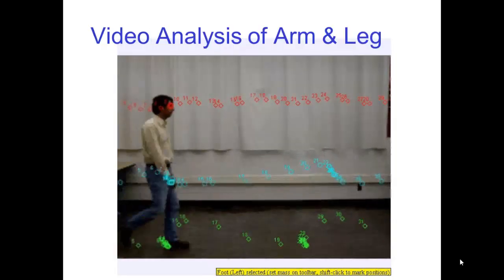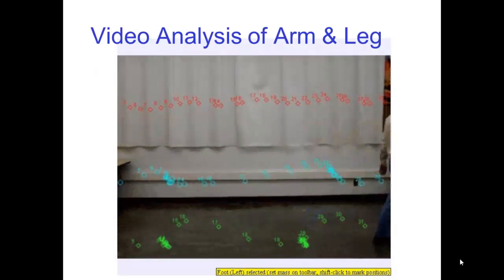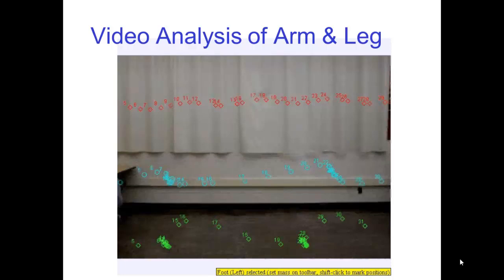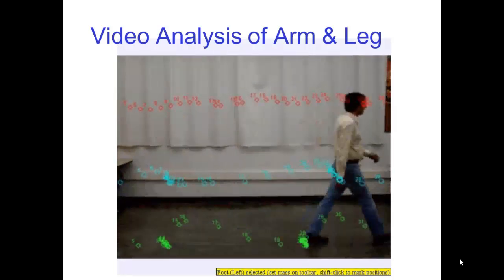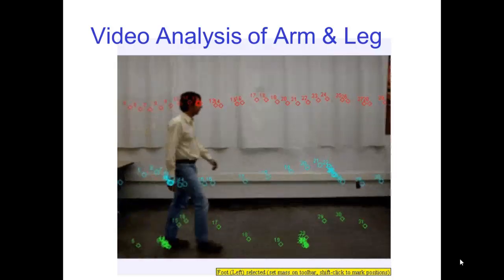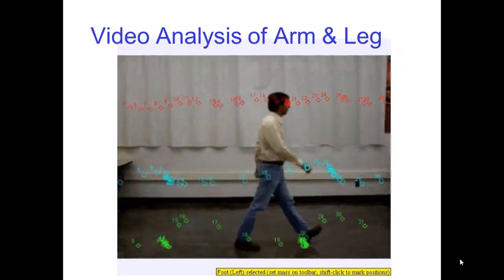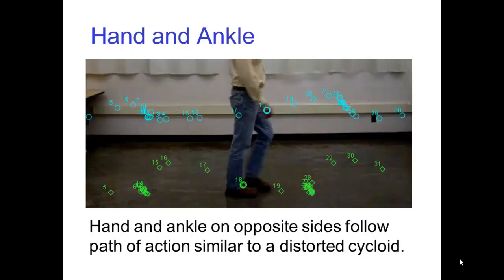Motion with a cycle often has secondary paths of action that are variants of circular arcs. Watch the path of action of my left foot, the green diamonds, and my right hand, the blue circles. The forward motion of the body, combined with the swinging motion of the arms and legs, produce paths of action that are similar to a distorted cycloid.